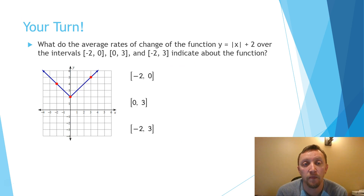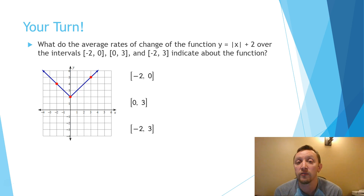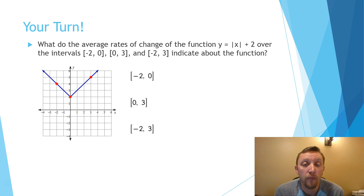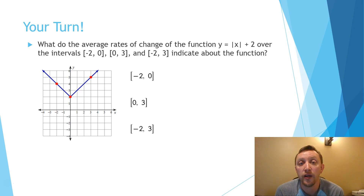I want you to try this on your own using the slope formula. Starting with the interval from negative 2 to 0, find the rate of change, then from 0 to 3, and from negative 2 to 3. Pause the video and go back if you need to review the previous slides. Try this on your own, and when you're ready to check your answer, hit play.